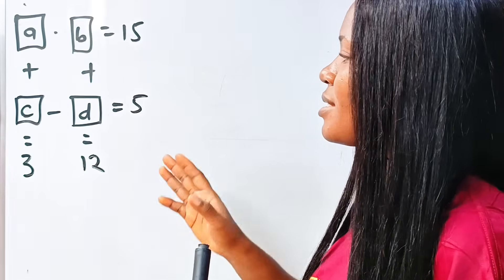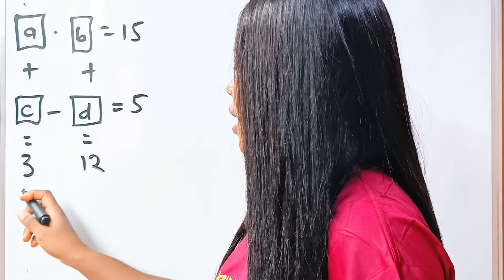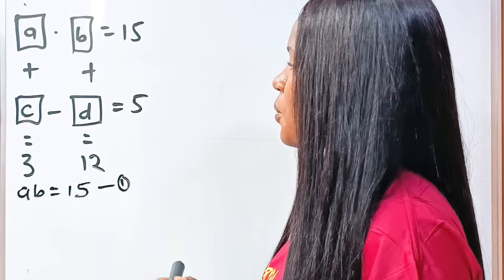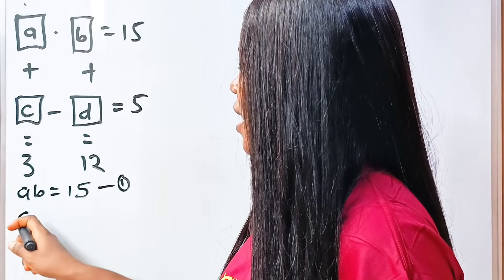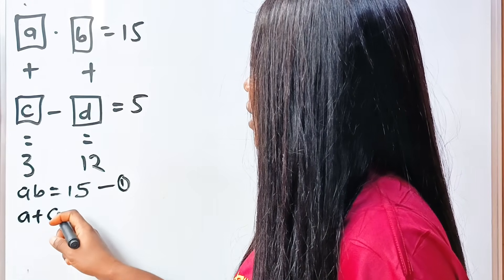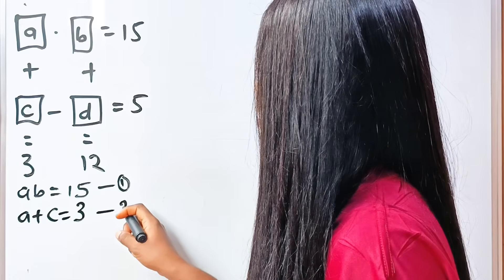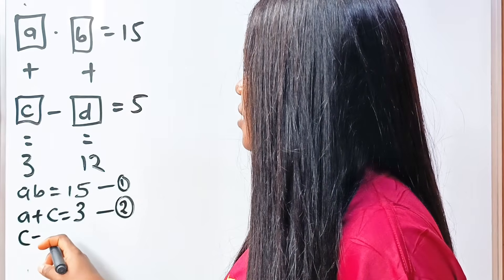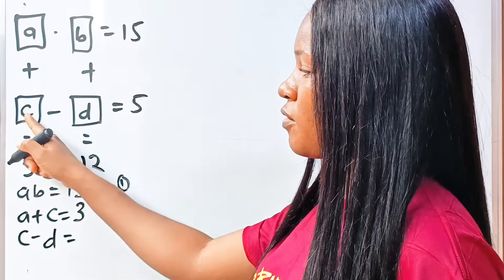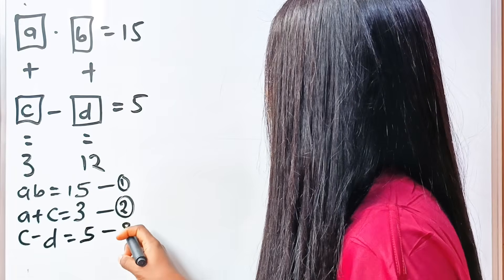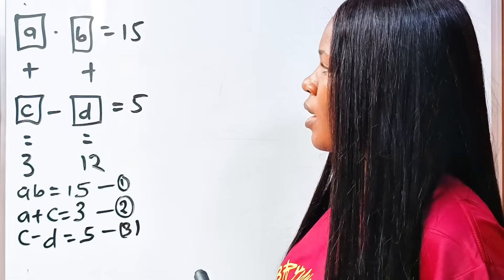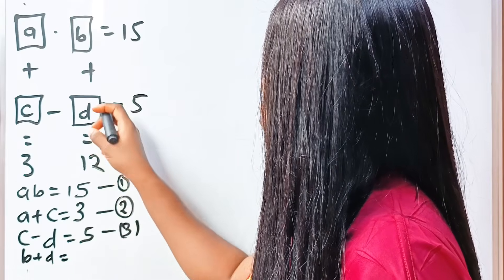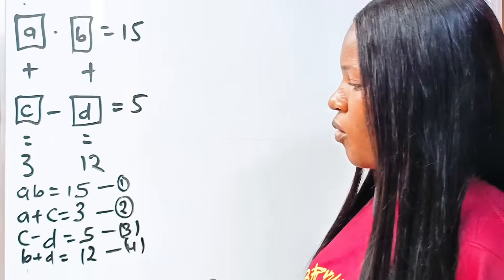These are the system of equations we can see. A multiplied by B is equal to 15 — call this equation 1. A plus C is equal to 3 — equation 2. C minus D is equal to 5 — equation 3. And B plus D is equal to 12 — equation 4.